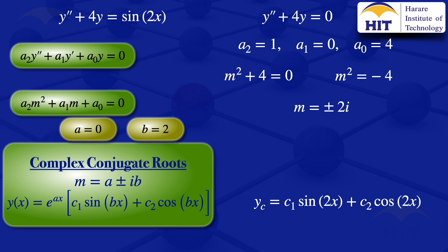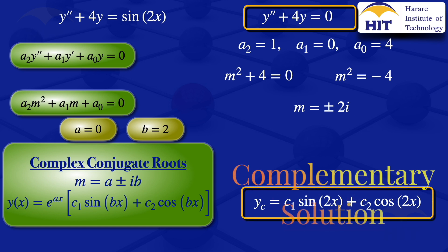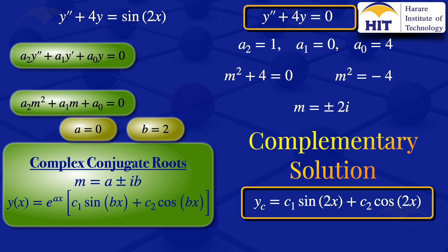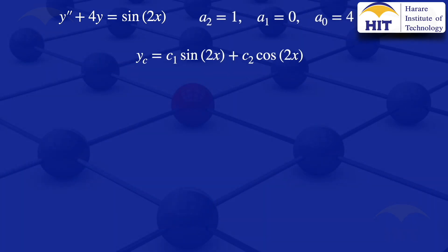This simplification occurs because e^(0) equals 1, so we just remain with what is in the brackets. The solution c1·sin(2x) + c2·cos(2x) is the complementary solution of the non-homogeneous ODE.